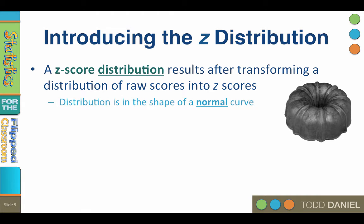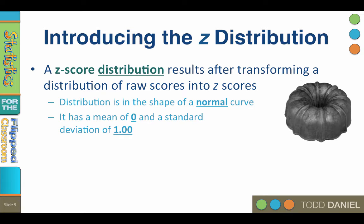A standardized z-score distribution is always in the shape of a normal curve, and this is the distribution we will use for calculations. It's important to know that converting a distribution to z-scores does not transform the shape of the original distribution — so if you calculate z-scores with a highly skewed distribution, it will still be skewed. However, a z-score distribution always has a mean of 0 and a standard deviation of 1, even if the original distribution is non-normal.